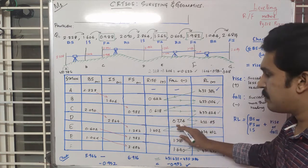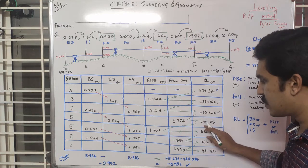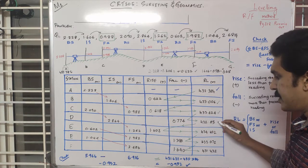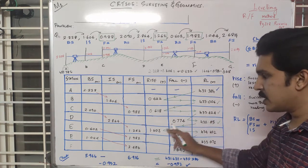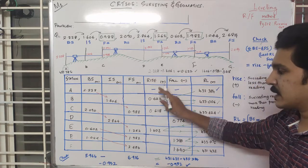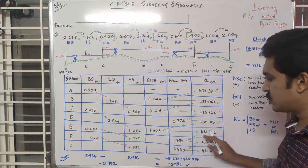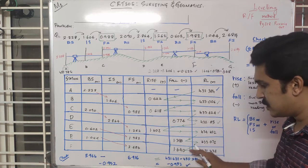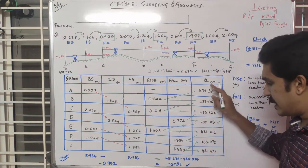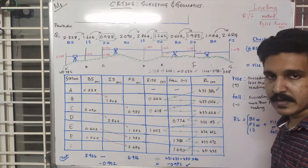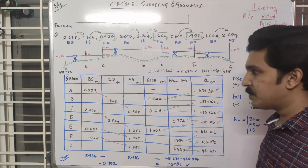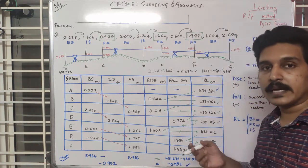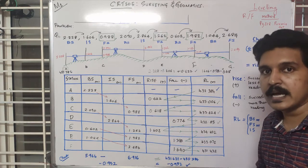Here rise is not applicable — this is a fall. 433 minus something equals 432, which is 0.333. So rise equals 0.333. Then rise value is plus 1.622 and fall is minus, giving the reduced level for that point.